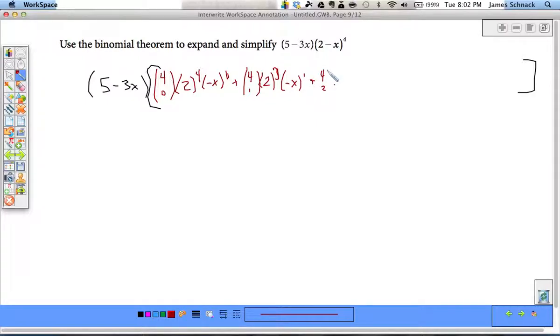Times negative x to the 3rd, times negative x to the 4th, times negative x to the 2nd, 2 squared. Use those parentheses guys.